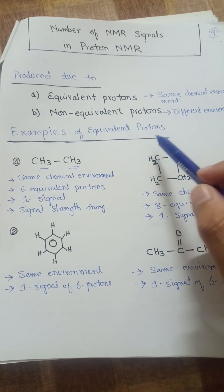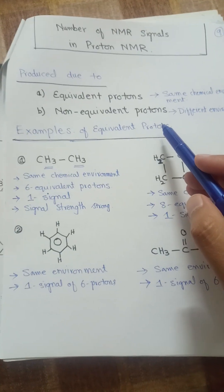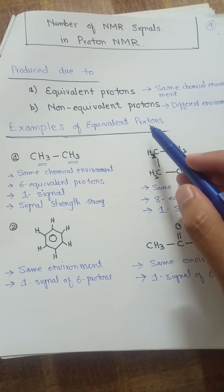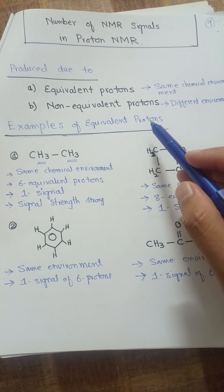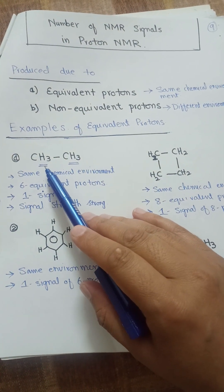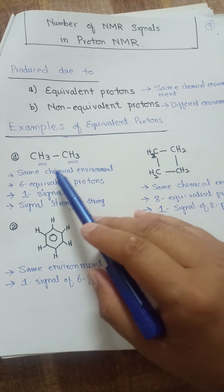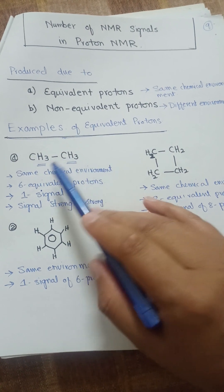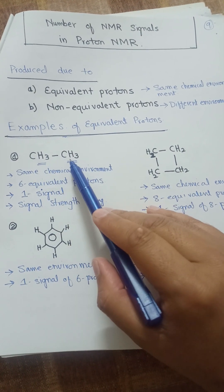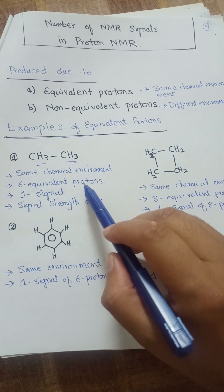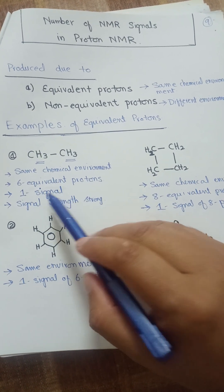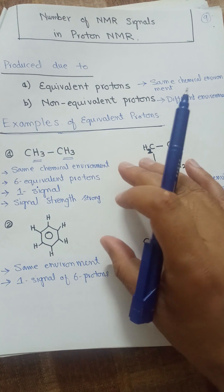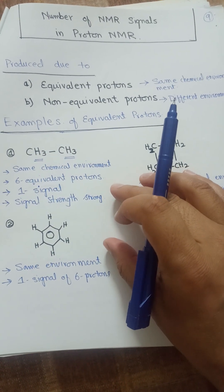We will look at examples of equivalent and non-equivalent protons and discuss that the intensity of the signal varies according to the number of protons. Here is the first example of ethane. In this molecule, these three protons and these three protons are in the same chemical environment. So there will be six equivalent protons which will produce one signal, and this signal will be intense, giving the intensity of six protons.